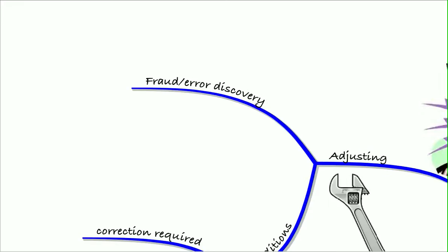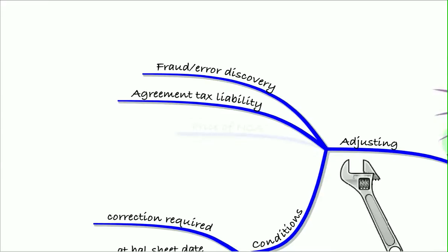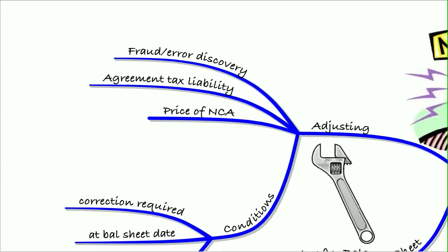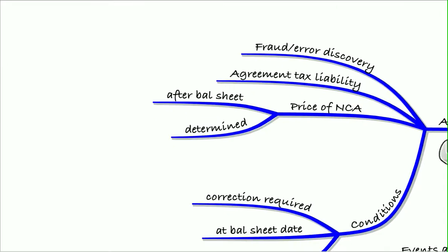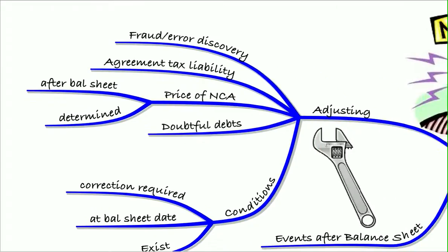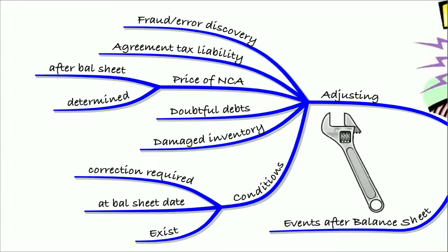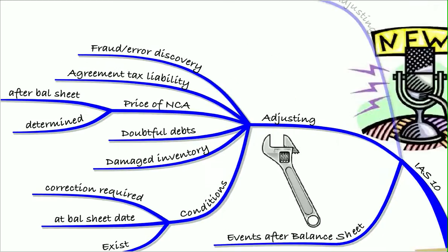So this might be a fraud or an error discovery, the agreement of a tax liability that we'd had an estimate for. Again, similar, the price of a non-current asset that's determined after the balance sheet date, doubtful debts or damaged inventory. All of that is evidence of conditions that existed at the balance sheet date. We need to adjust the accounts to reflect that.